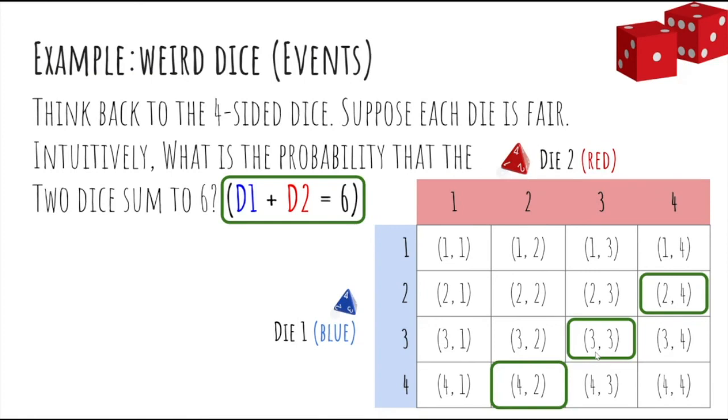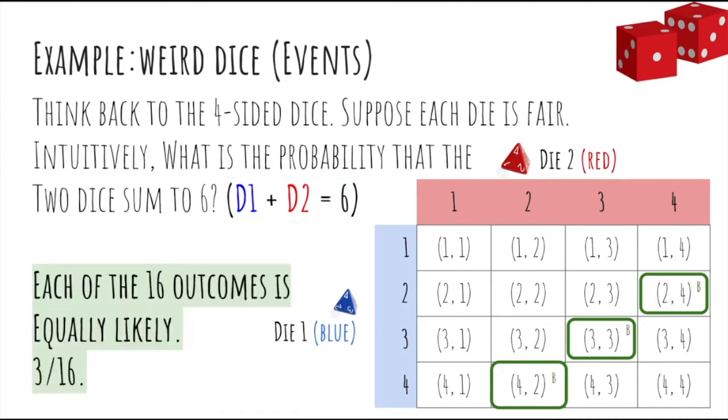So thinking back to this example, supposing that each die is fair, then intuitively what's the probability that the two die sum to six? So there's three outcomes that map to that event. So you'd expect that if there are three out of 16 total outcomes and each outcome is equally likely, then the probability should just be three out of 16, which is correct.